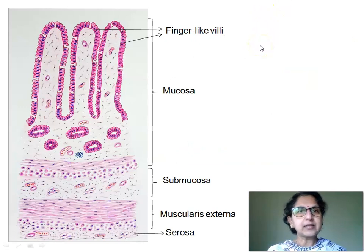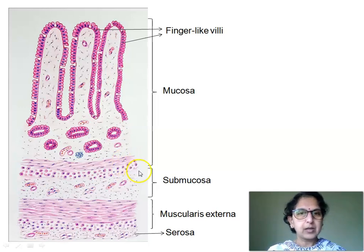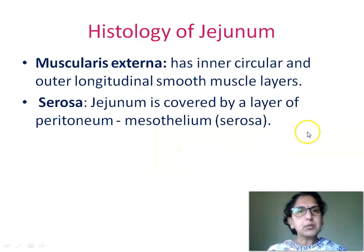Here is a diagram showing histology of jejunum. We see the mucosa showing lining epithelium — simple columnar epithelium with goblet cells — and finger-like villi. We also see the intestinal glands or crypts of Lieberkühn and the muscularis mucosae, having inner circular and outer longitudinal layers of smooth muscle fibers. The submucosa has connective tissue with blood vessels, adipocytes, Meissner's plexus, and lymphatics. Muscularis externa has inner circular and outer longitudinal smooth muscle layers.